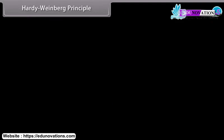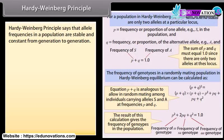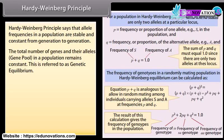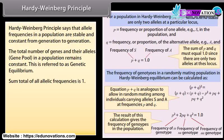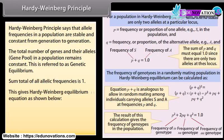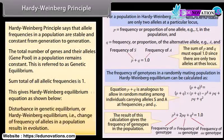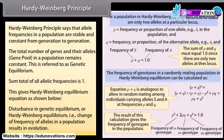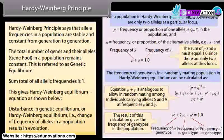The Hardy-Weinberg Principle states that the allele frequencies in a population are stable and constant from generation to generation. The total number of genes and their alleles — that is, the gene pool — in a population remains constant, referred to as genetic equilibrium. The sum total of all allelic frequencies is 1. Disturbance in genetic equilibrium, i.e., change of frequency of alleles in a population, results in evolution.